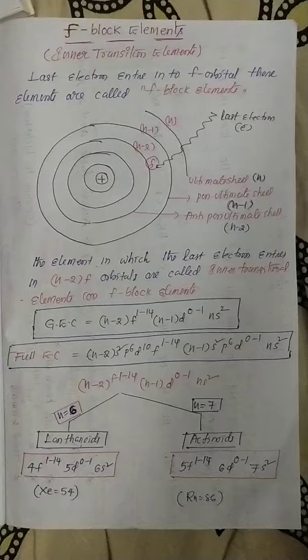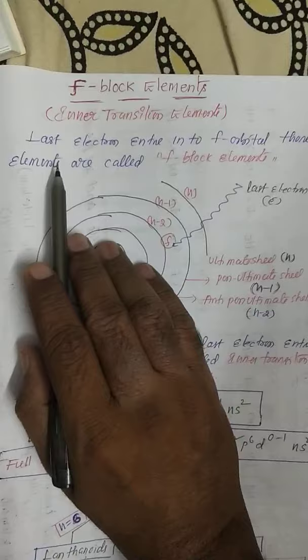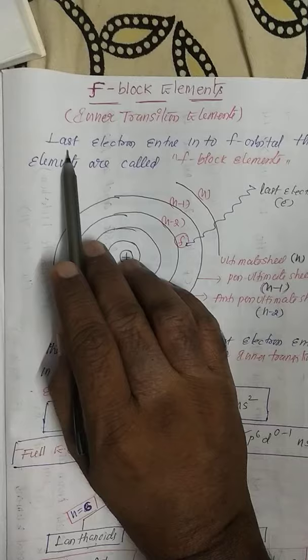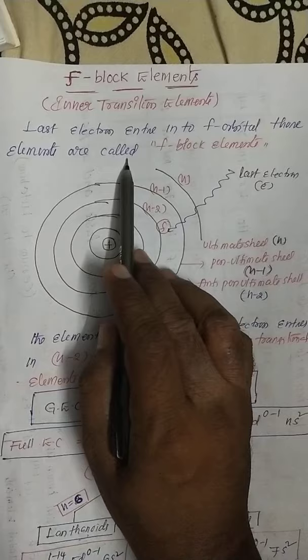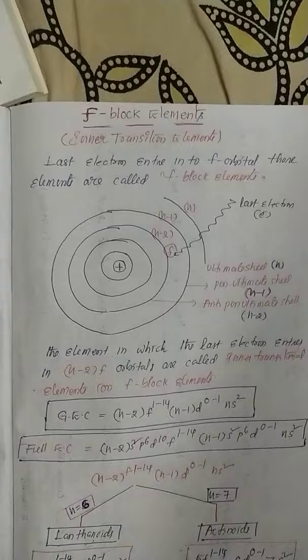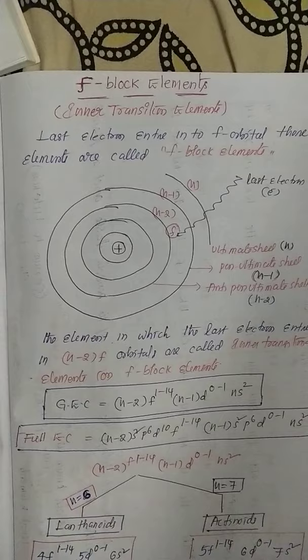F-block elements are also known as inner transition elements. The definition is: the element in which the last electron, or differentiation electron, enters into the F-orbital — those elements are commonly known as F-block elements.